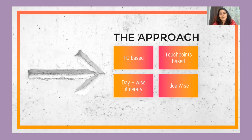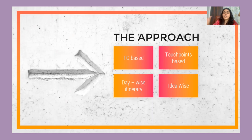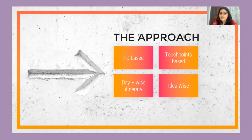The fourth approach is idea-wise — if you have multiple ideas, such as a technology idea, a flash mob idea, and a street act idea, you divide the presentation by idea. Under each idea, you explain who the target group is and what touchpoints it covers. All the details still get covered; it's just about which approach makes it easiest for the client to understand what you're proposing.